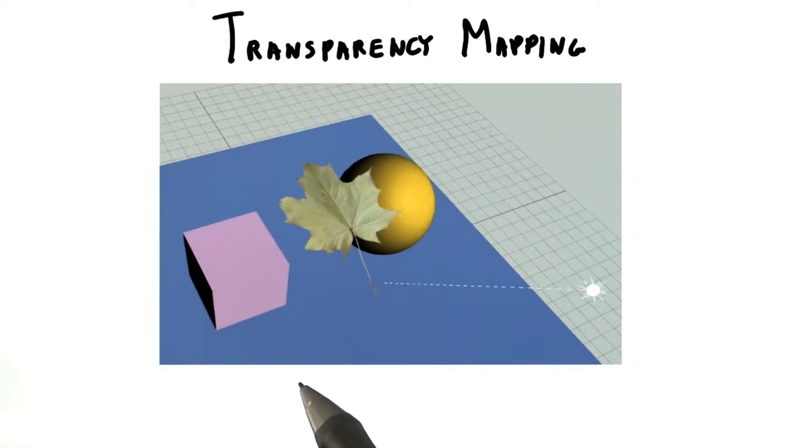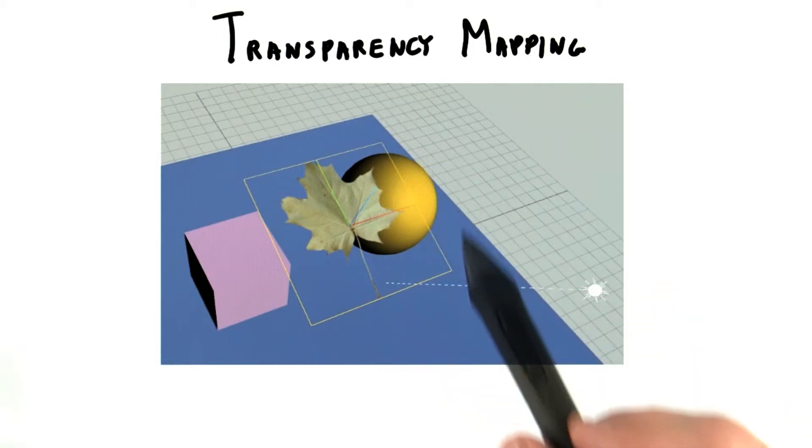Here's a simple scene with a leaf added to it by putting a leaf texture on a square. Here's the same scene with the square selected, so you can see the underlying geometry.